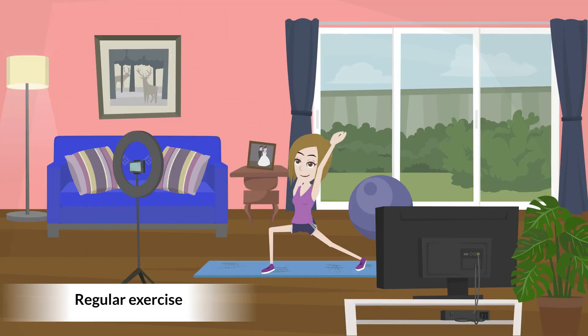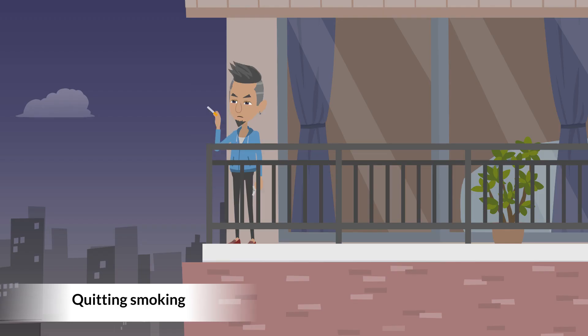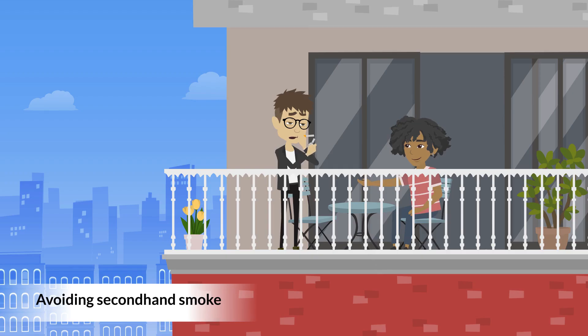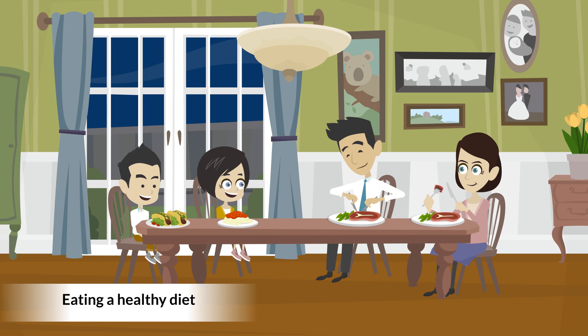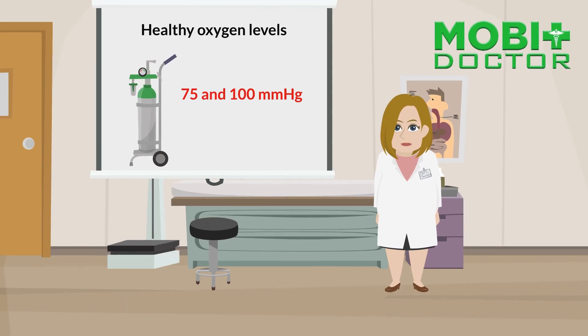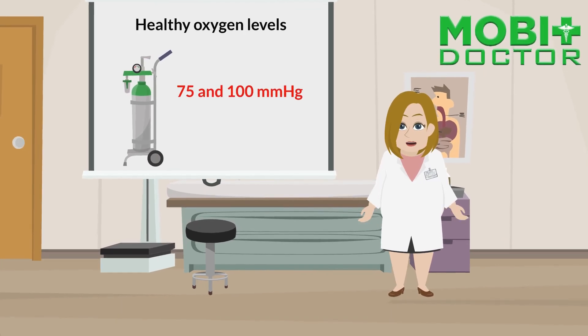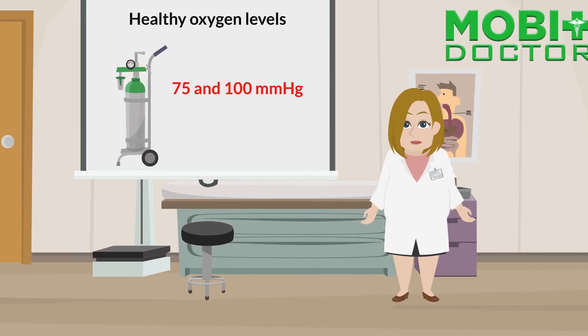Regular exercise, quitting smoking, avoiding second-hand smoke, and eating a healthy diet is the key to maintaining healthy blood oxygen levels.